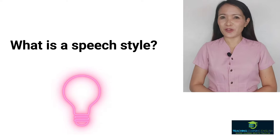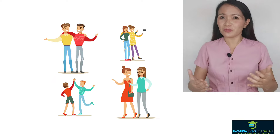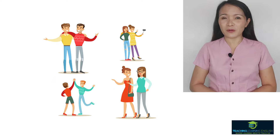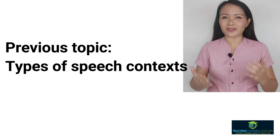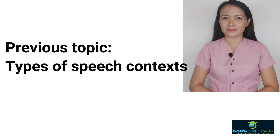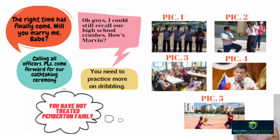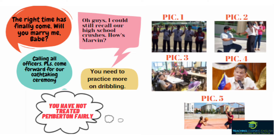We discussed in our previous lesson that the environment and the number of people involved are important factors in communication. I have here samples of sentences or direct sentences extracted from dialogues and pictures. Let's try to analyze the pictures — what's the best sentence for picture one? How about picture two, picture three, four, and five?